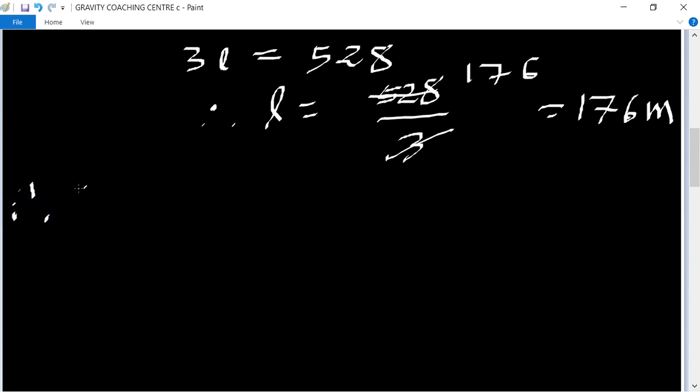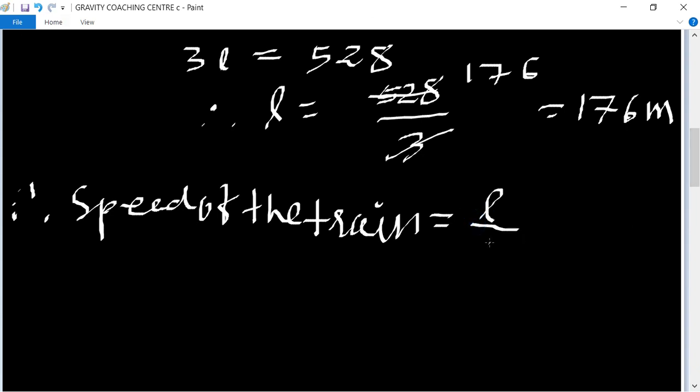Therefore speed of the train: L upon 8 multiplied by 18 upon 5. So L is 176, giving us 176 upon 8 into 18 upon 5.